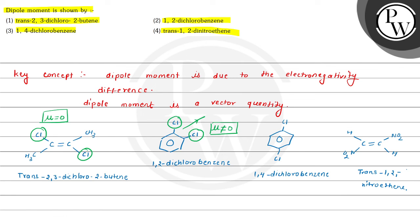In 1,4-dichlorobenzene, both chlorine atoms are attached in opposite directions, so the net dipole moment equals zero (μ = 0). In trans-1,2-dinitroethene also, both nitro groups are attached in opposite directions, so they cancel each other's dipole moment and the net dipole moment is also zero. Therefore, dipole moment is present only in 1,2-dichlorobenzene, which is given in option 2.